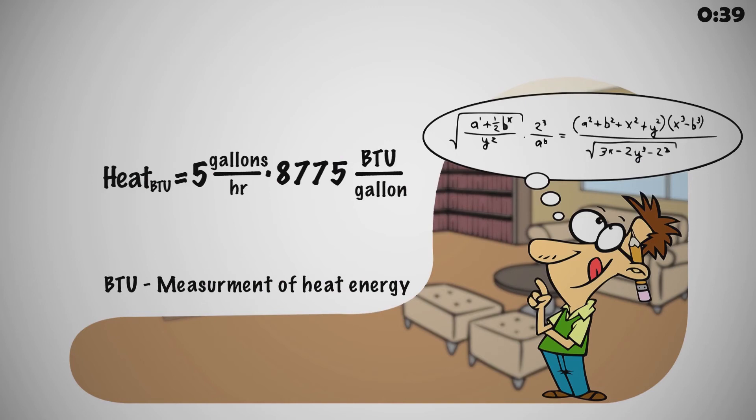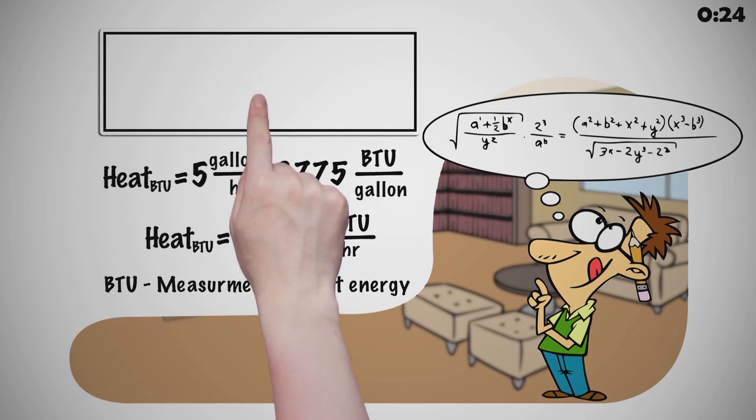Heat in the formula is expressed in BTU and equated to Power Breezer water evaporation at the rate of 5 gallons per hour multiplied by 8,775 BTU per gallon, totaling 43,875 BTU.